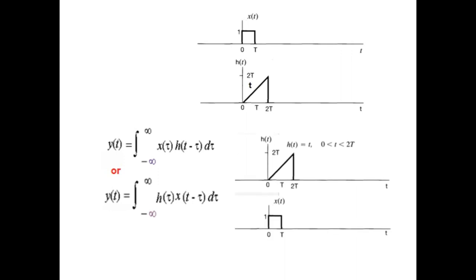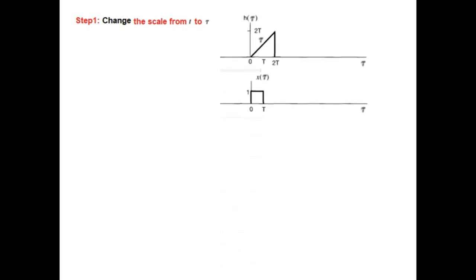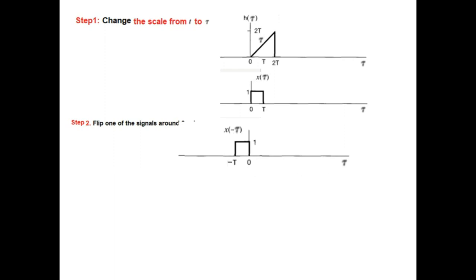Our arrangement will now be like this: this is Ht and here is Xt. We will flip and shift the X function. Step one: change the variable from T to tau, so everything has now been changed from T to tau. Now flip the Xt signal around the axis — it becomes the flipped signal, and since it is in the negative direction it will be X(−tau). Now we will work with these two signals.